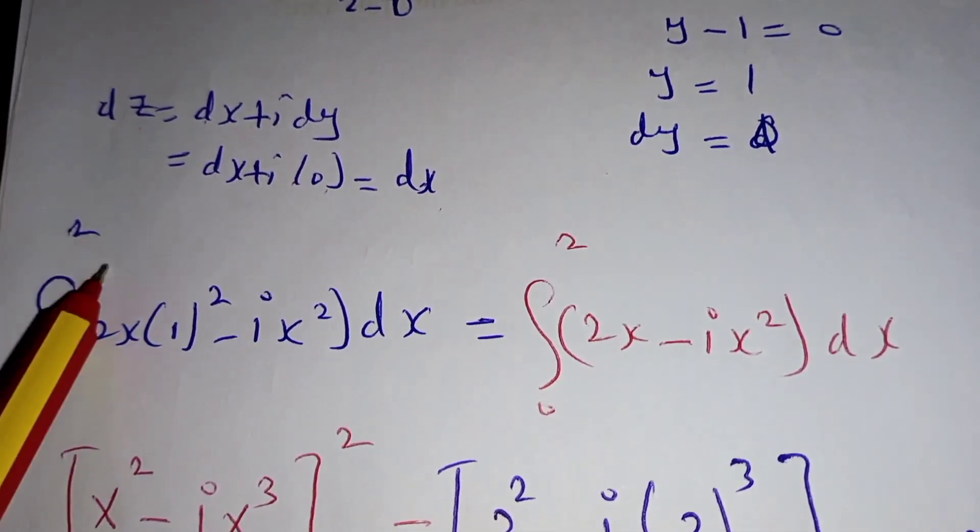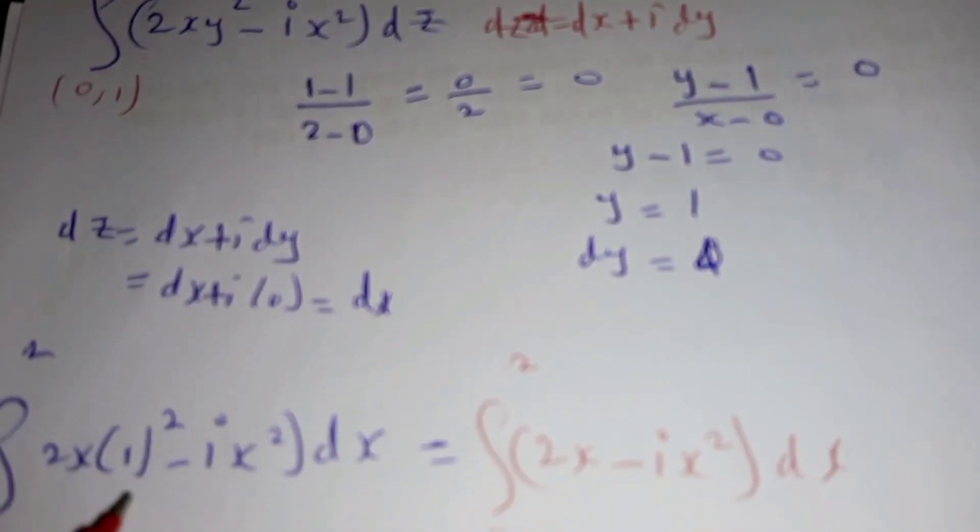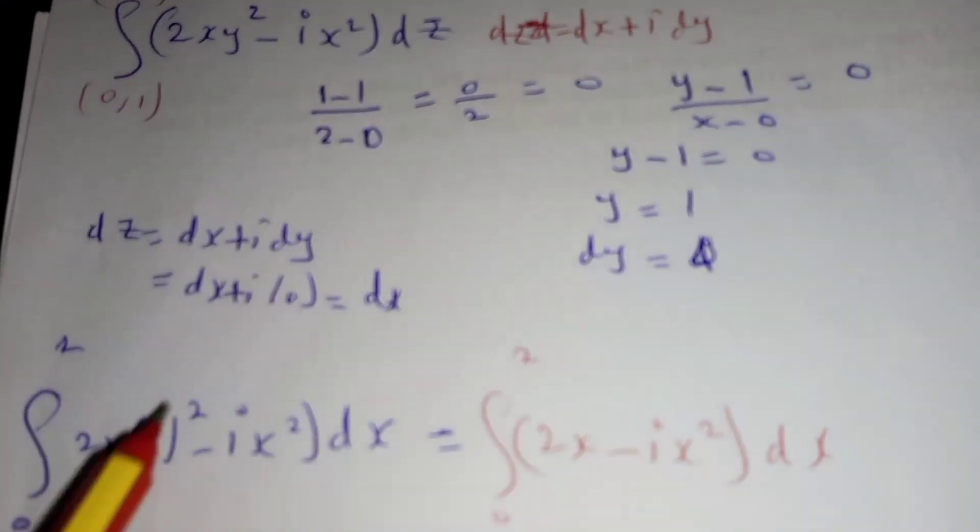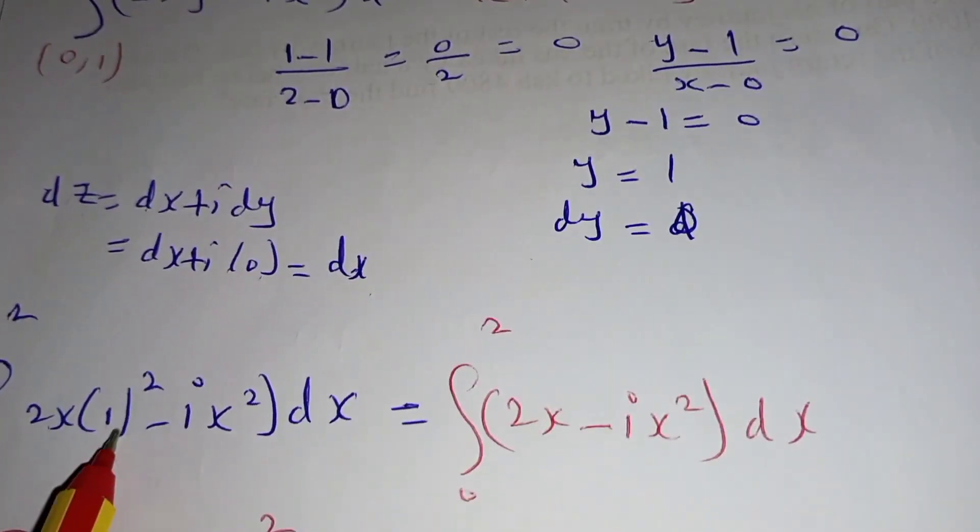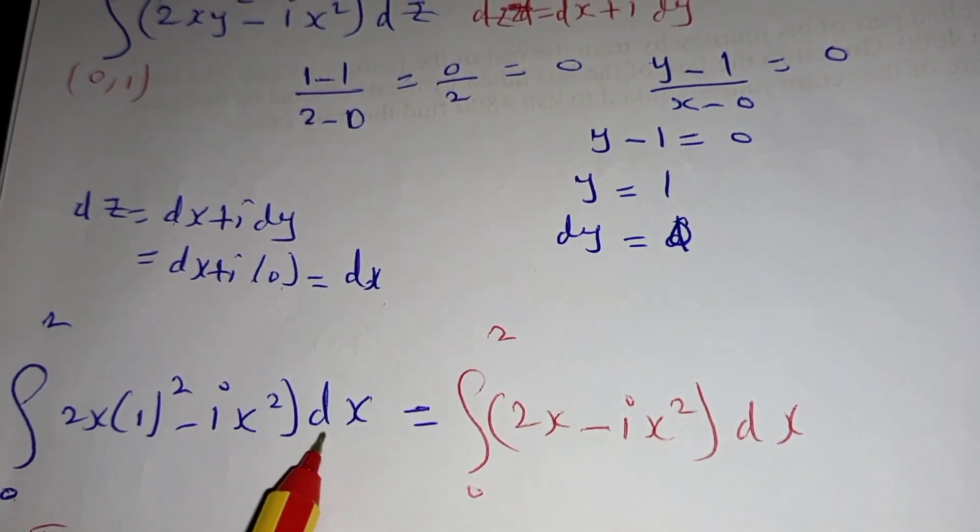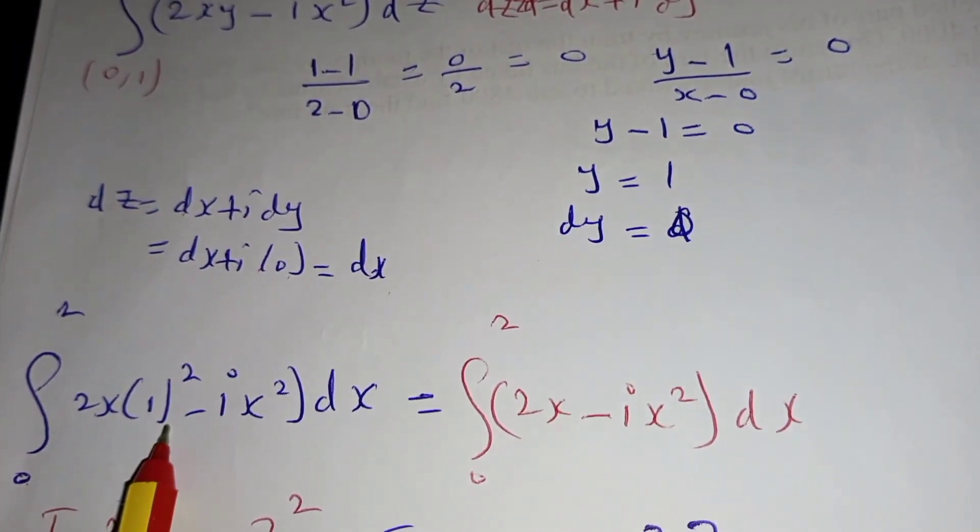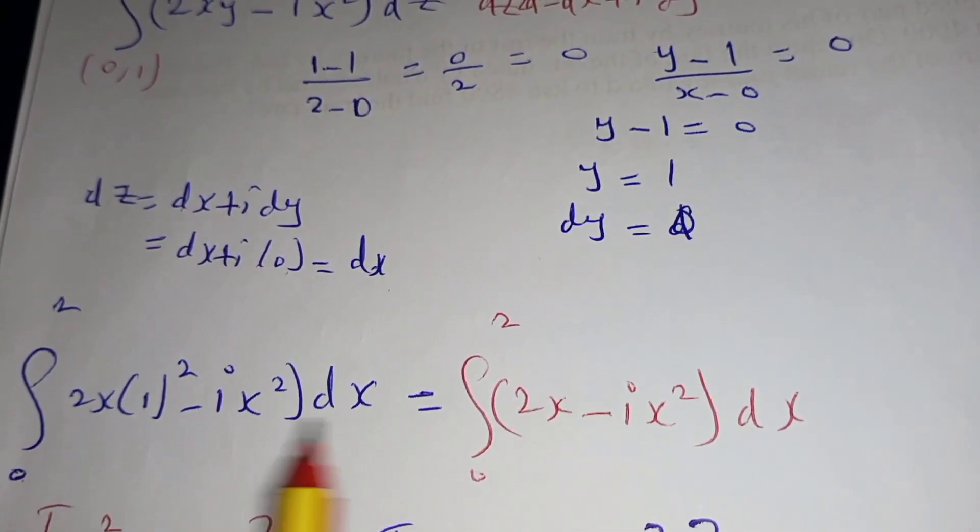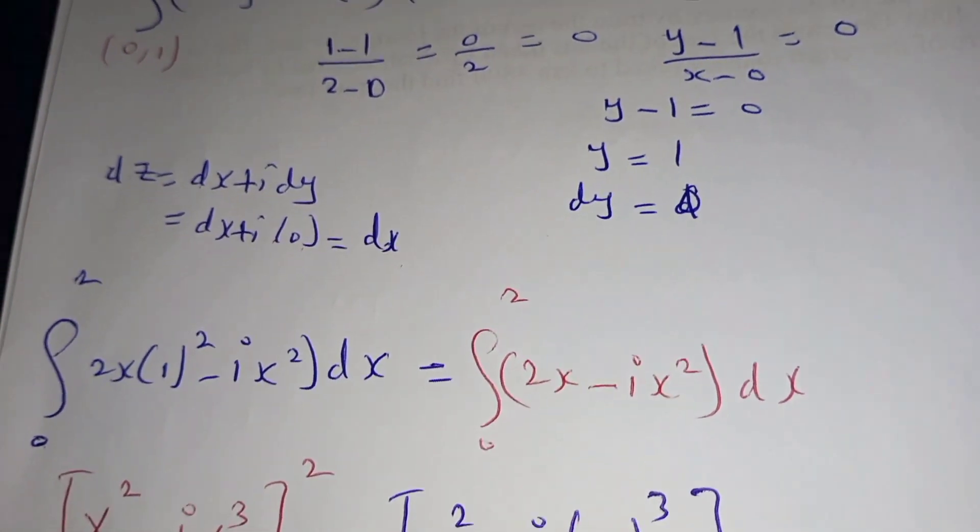So we come to this complex integral which reduces to a line from 0 to 2 of 2x(1)² - ix² dx. Since y = 1, this is 2x - ix².